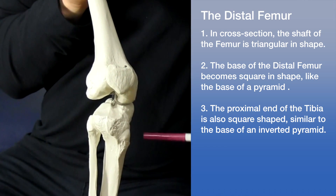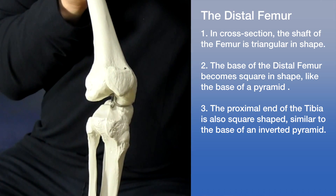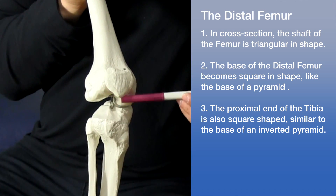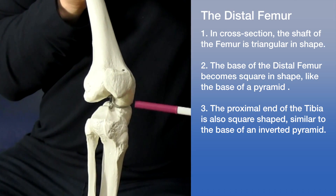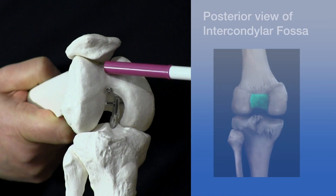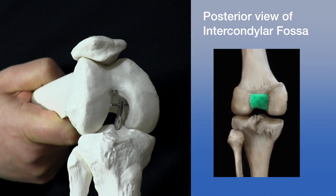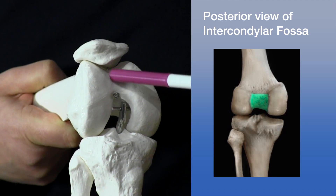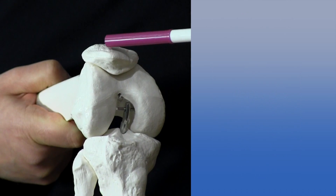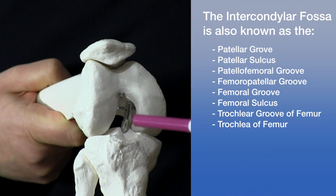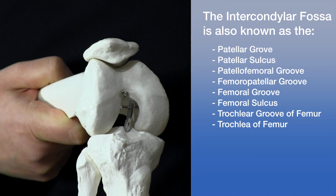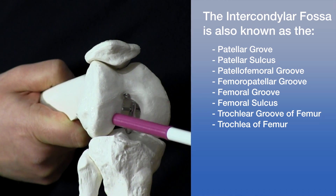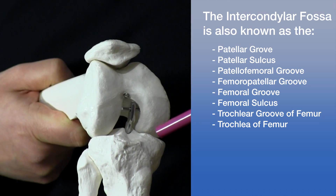The proximal end of the tibia is also in the shape of a pyramid, but an upside-down pyramid. Looking at the base of the distal femur, the articular surfaces are quite round and roughly resemble the shape of a pulley. The anterior portion of the distal femur is called the intercondylar fossa of the femur, which articulates with the patella. The single tract pulley becomes a double tract in the posterior inferior aspect — these tracts are the medial and lateral condyles of the femur, which articulate with the condyles of the tibia.